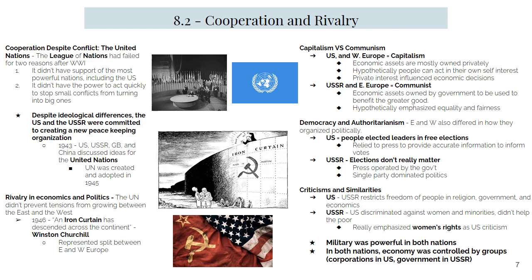After World War II, despite already being in the early days of a Cold War and with massive ideological differences, the US and the USSR were committed to creating a new peacekeeping organization to replace the failed League. In 1945, the USA, Soviet Union, Great Britain, and China created and joined the United Nations. Eventually France would join these four, and those five countries would all share the power to veto the actions of the others and basically everyone else in the United Nations. The UN was a place where communications could be maintained between hostile nations, even in the midst of Cold War or hot war. Ultimately, the UN was unable to prevent tension from increasing.